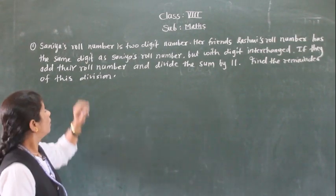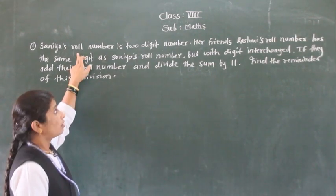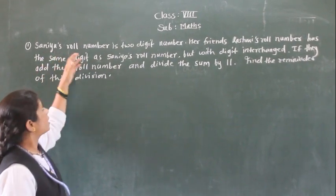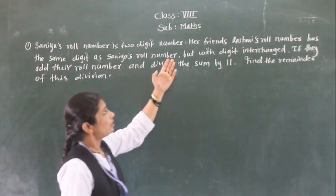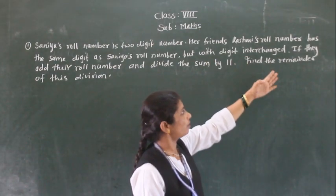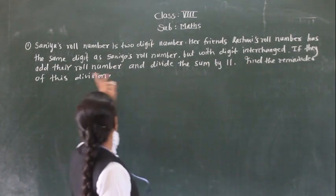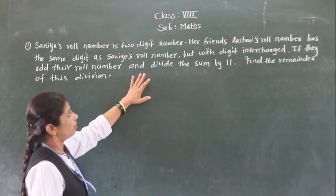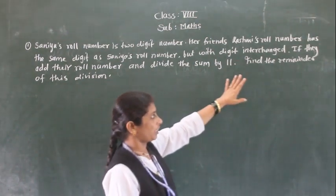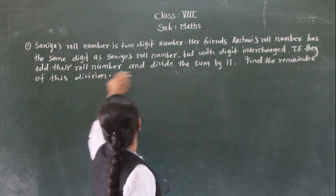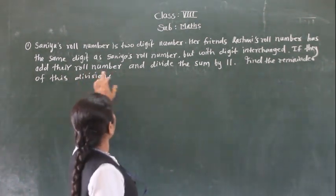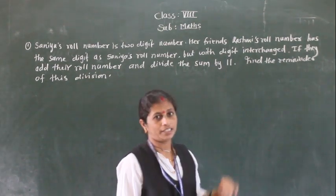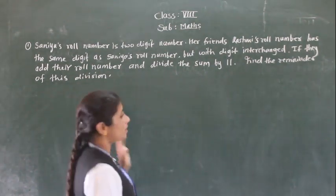Hello students. Let's look at today's example first. Samia's roll number is a two-digit number. Ashmi's roll number has the same digits as Samia's roll number, but they may be changed. If we add the roll numbers and divide the sum by 11, find the remainder.